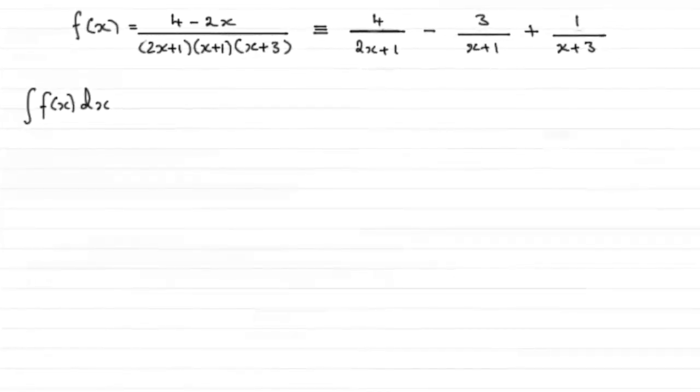Now for this part what we've got to do is integrate f(x) with respect to x, and we discovered that f(x) in the previous part was equivalent to these three individual fractions. You'll notice I've put the constants that we found in above them.